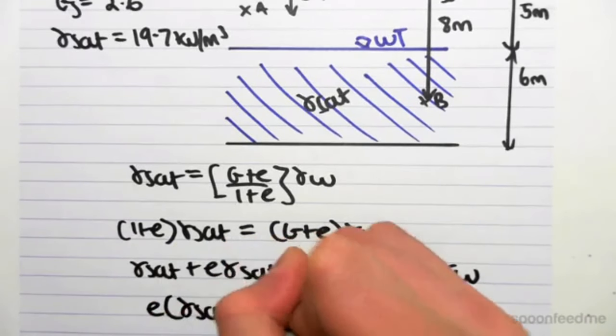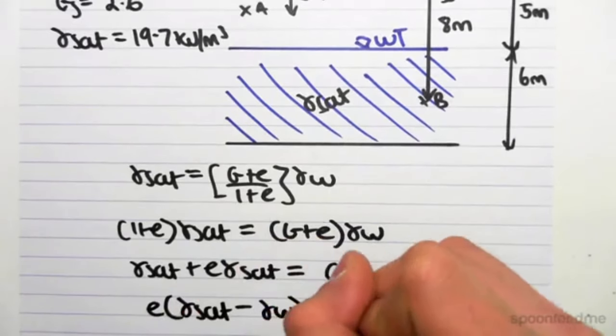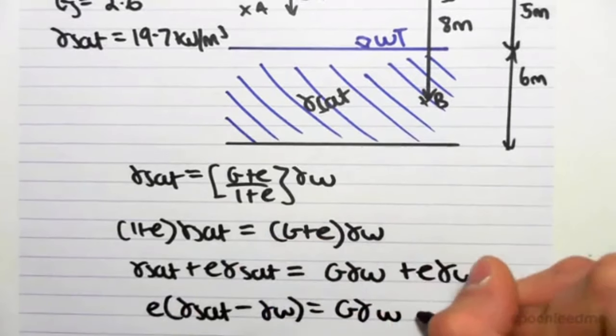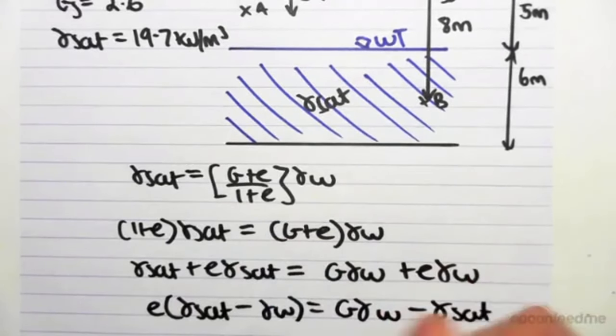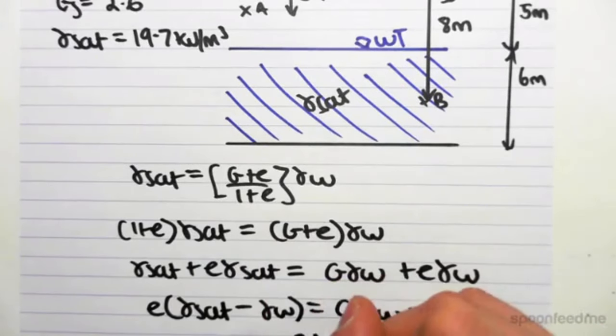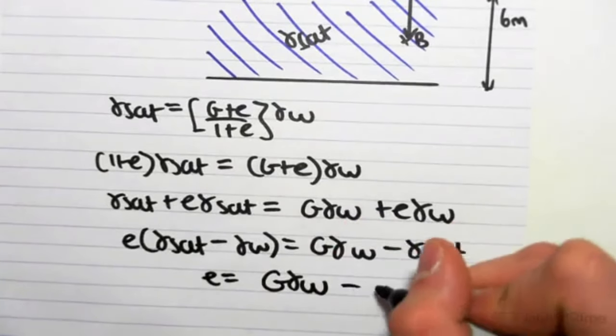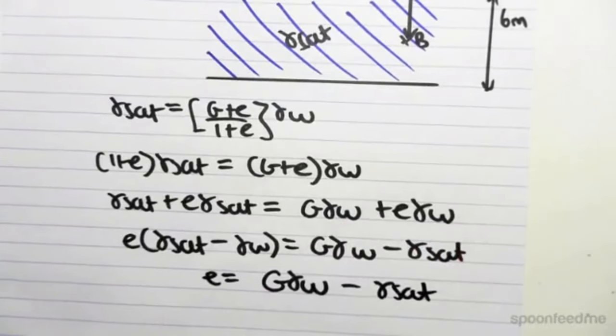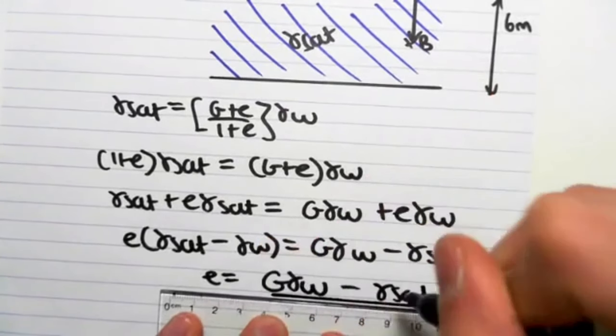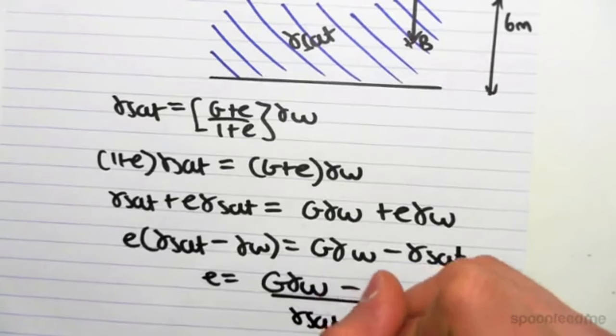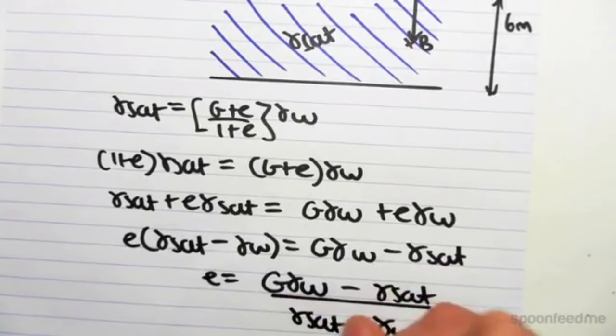Let's put all the E's on this side. So we get E gamma sat minus gamma W equals G gamma W minus gamma sat. And we can finally get E equals G gamma W minus gamma sat over gamma sat minus gamma W.